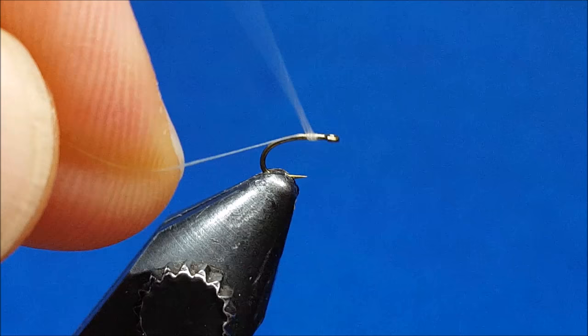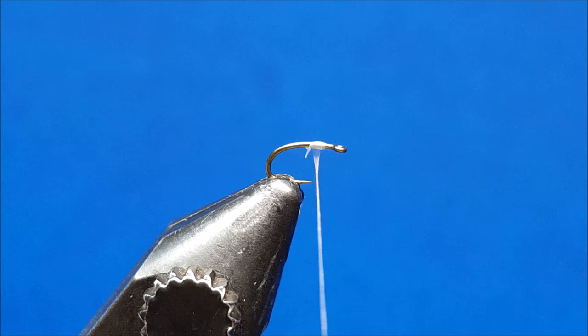Start by coming in with the white 70 denier, attaching it to the hook shank, and snapping off the excess.